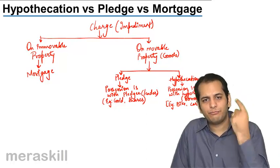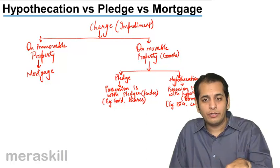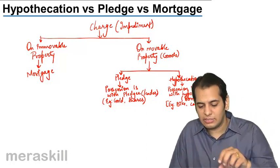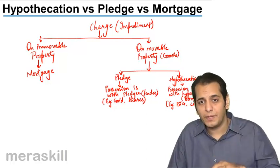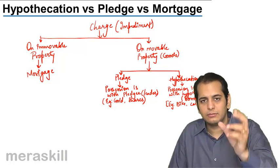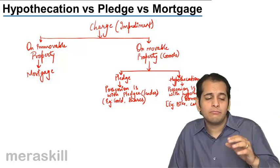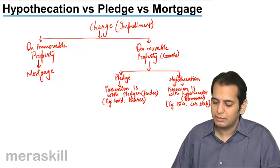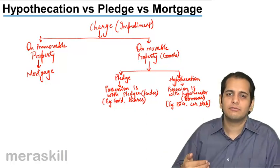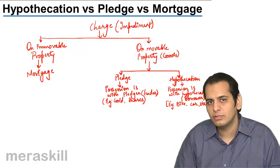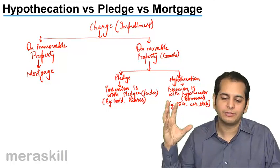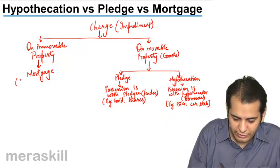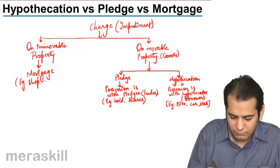To summarize: charges are of two types based on movability. On immovable property, the charge created is mortgage. On movable property — goods — the charge created is pledge or hypothecation. In pledge, the possession of the security such as shares, gold, or other assets is kept with the lender. In hypothecation, the possession remains with the borrower. Examples for mortgage would be a shop, house, or flat.